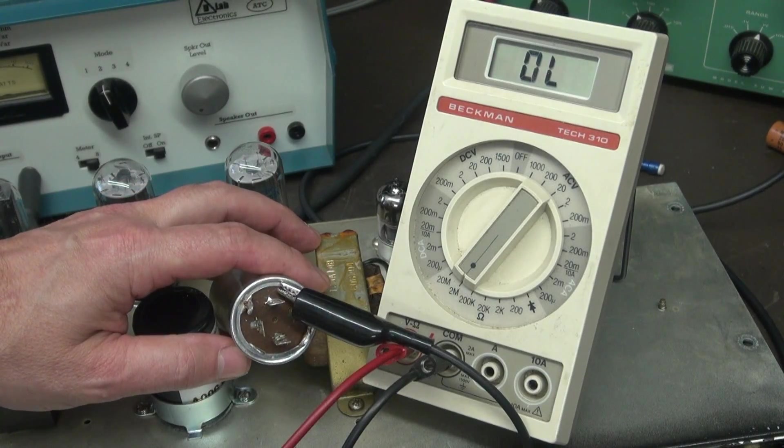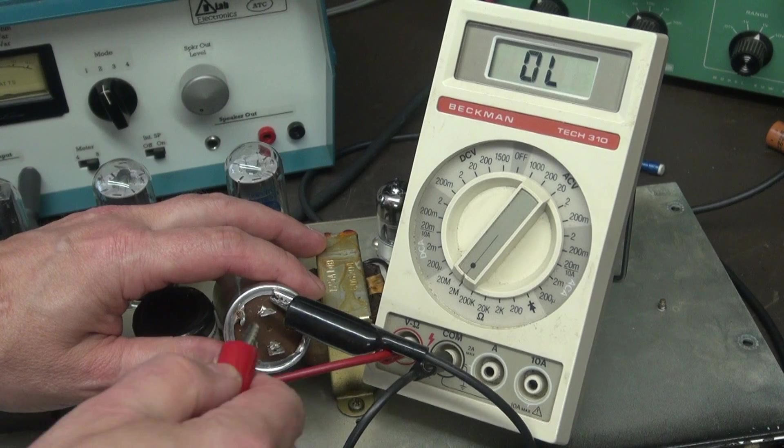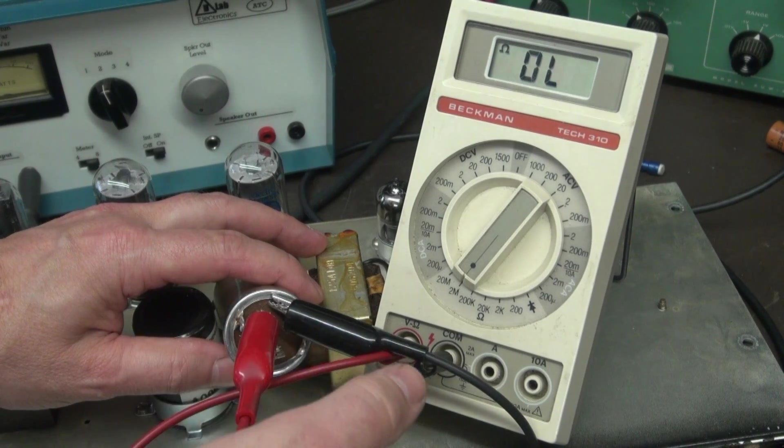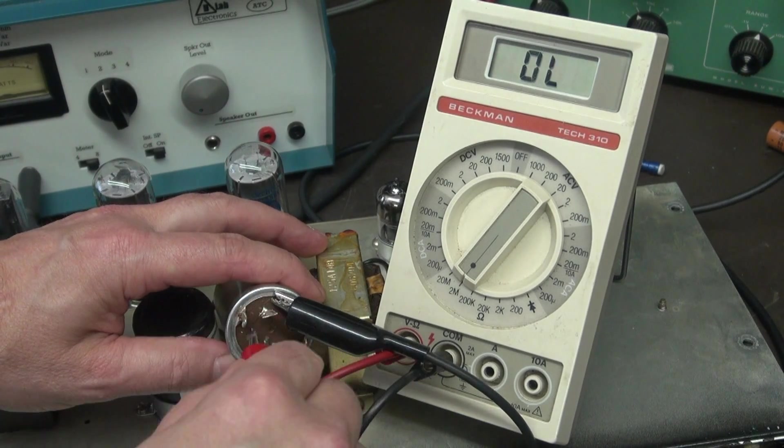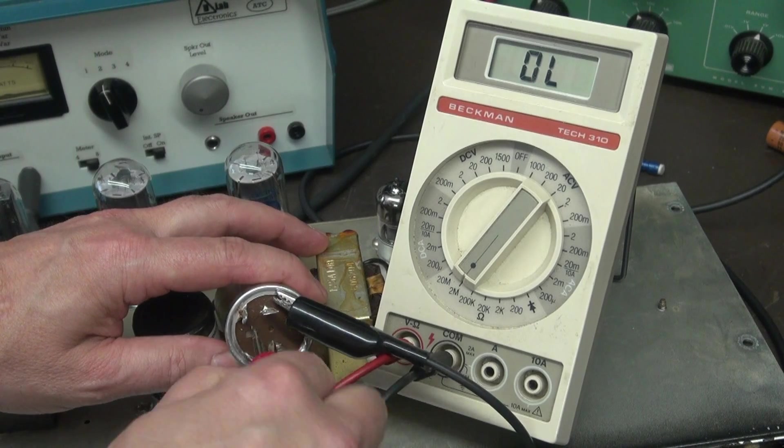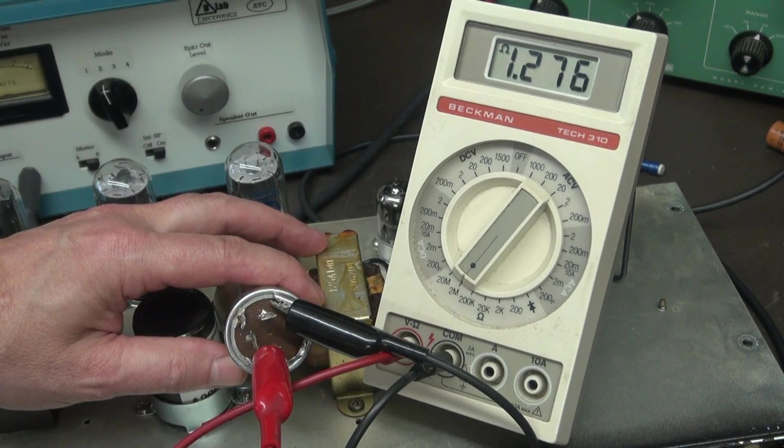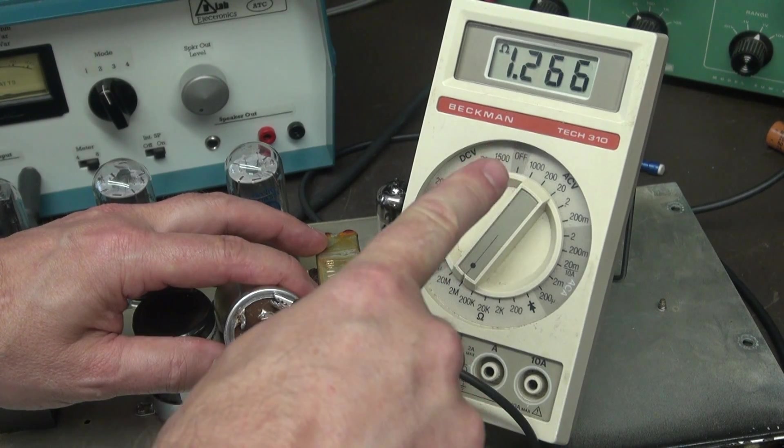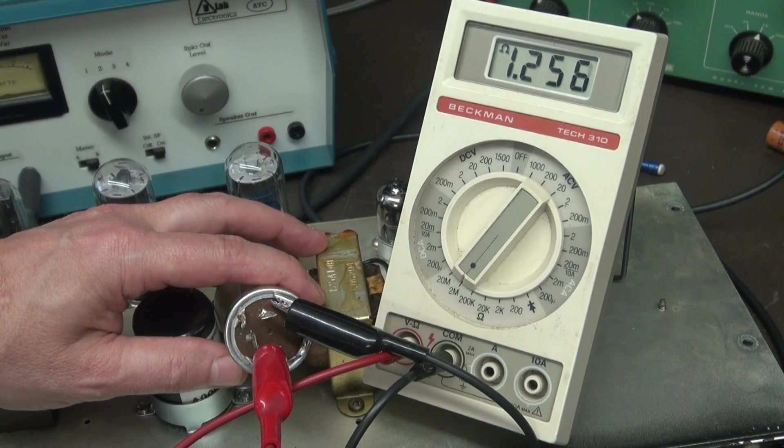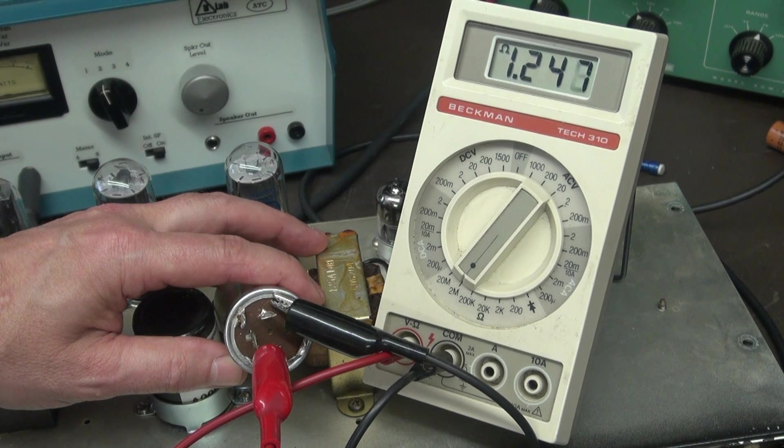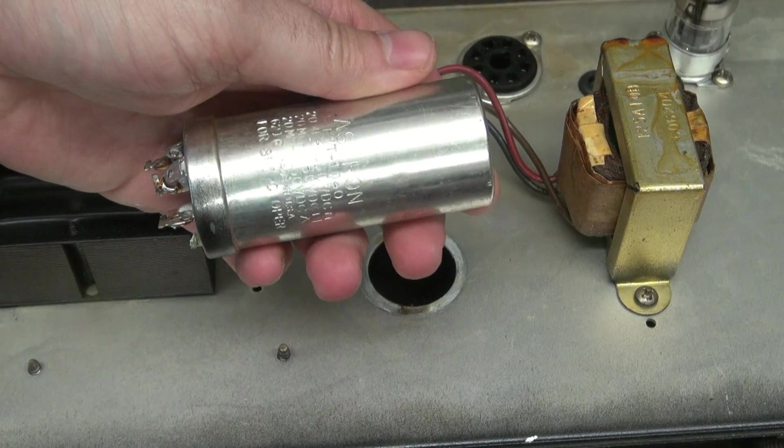So let's take a multimeter and check this cap for leakage. Here's section three, which will go to your preamps. Section two, screen. There's section one, which is plate. You see that? That's leakage to the case of the cap. So that's our culprit.